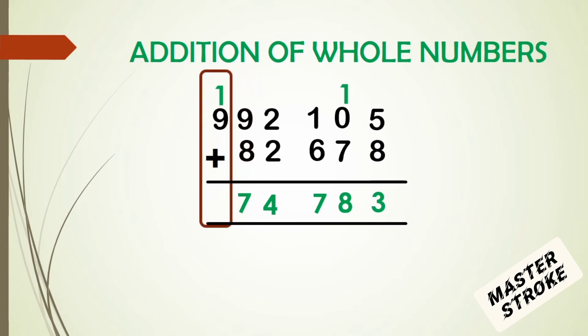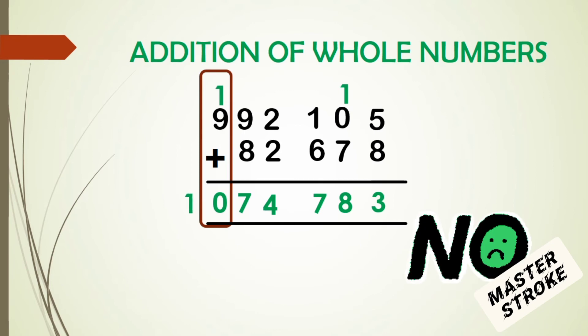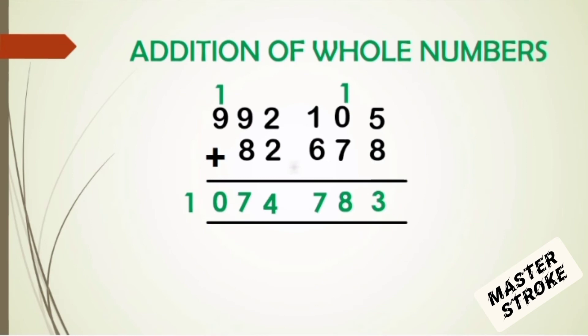In the last column, we have 1 plus 9, which gives us 10. Now, this gives us a 2-digit answer. So, do we carry the 1? No, because there are no other digits to the right. Therefore, our answer is now 1,074,783.